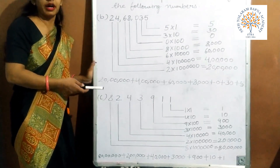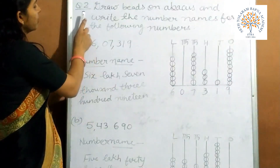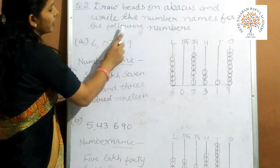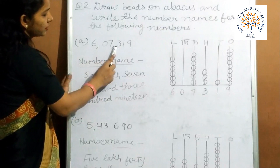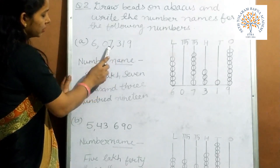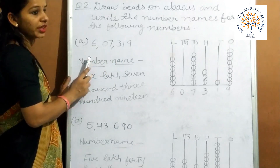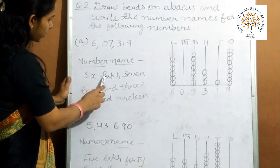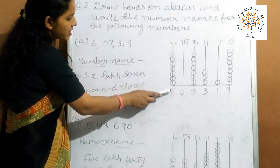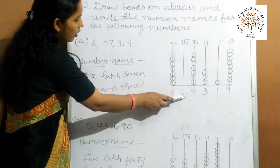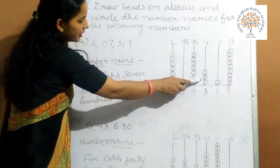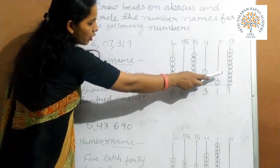In this way you can find the expanded form of any number. Now question number 2: draw beads on abacus and write the number names for the following numbers. Part a: 6,07,319. According to the Indian place value chart, the number name is 6,07,319. On the abacus, we draw 6 beads on lakh place. There is no digit on 10,000 place, so we will not draw beads there. 7 beads on 1000 place, 3 beads on 100 place, 1 bead on 10s place, and 9 beads on 1s place.